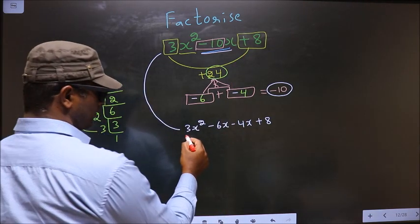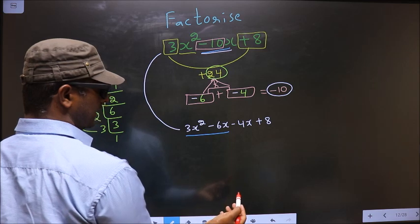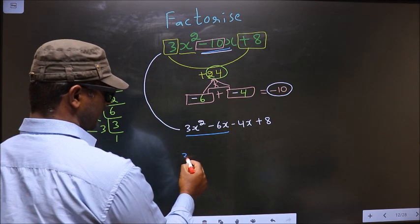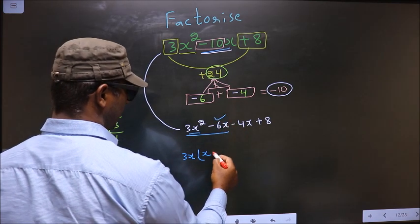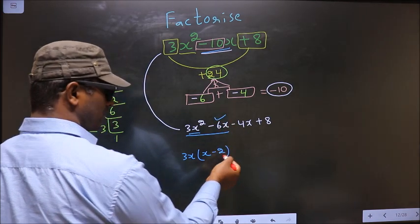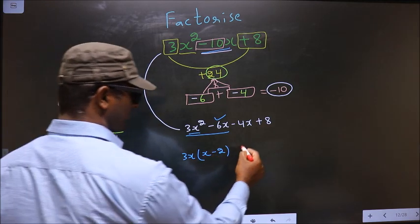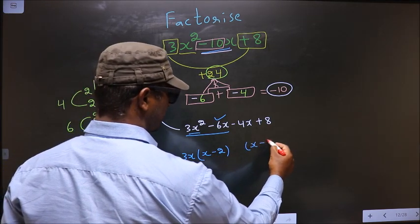Next. From these two terms what can be taken out common is 3x. So here you get x and here you get minus 2. Whatever you have got here, here also you should get the same thing.